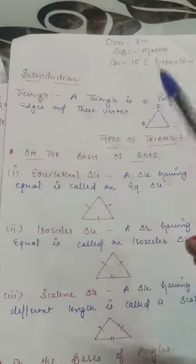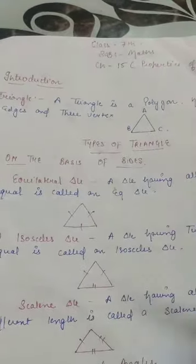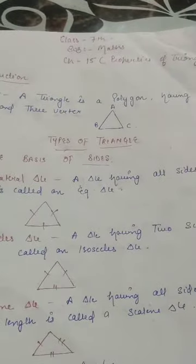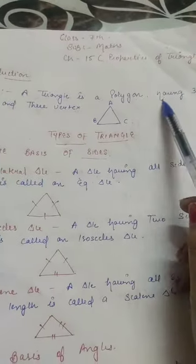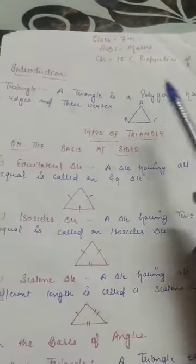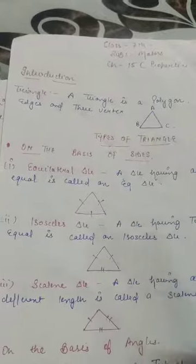First, you all know a triangle is a type of polygon — it is a polygon having 3 sides and 3 vertices.